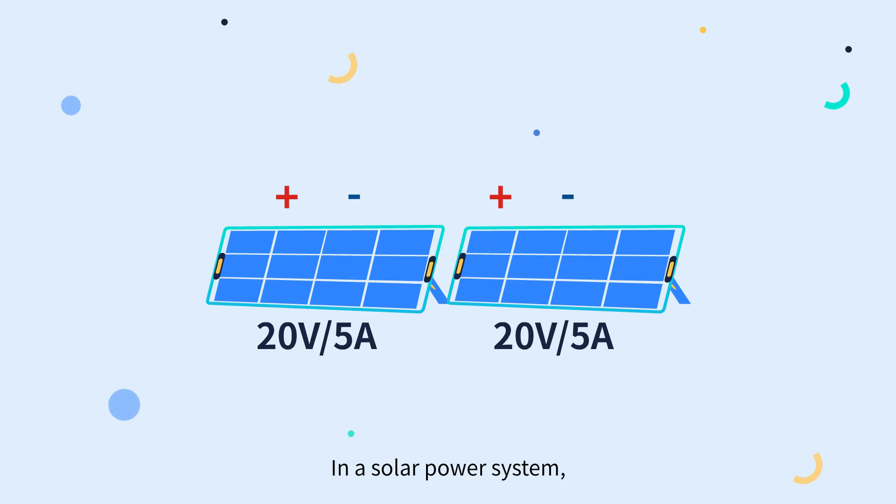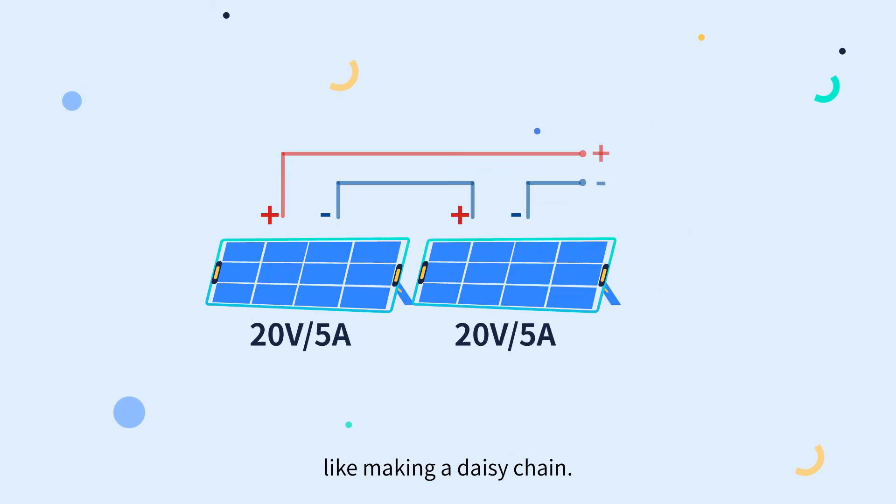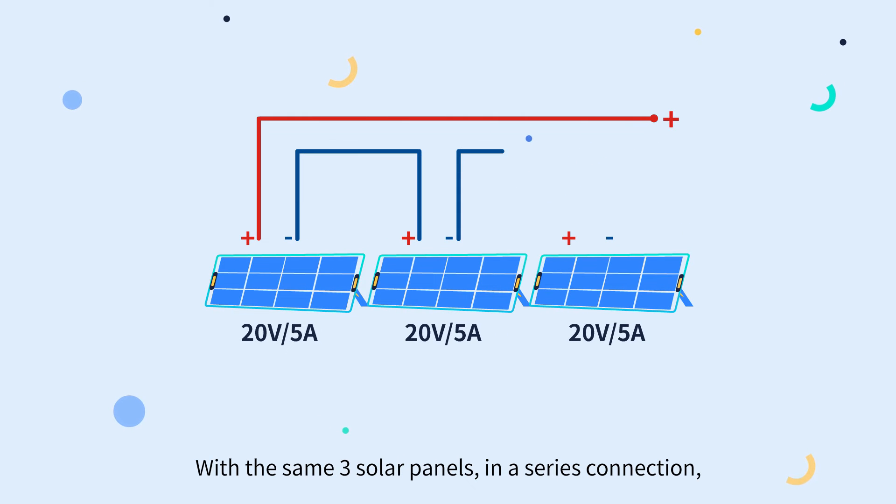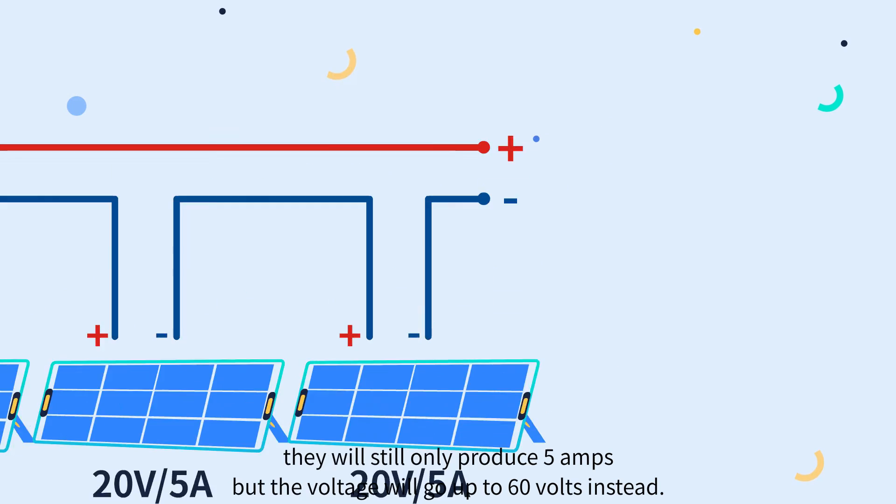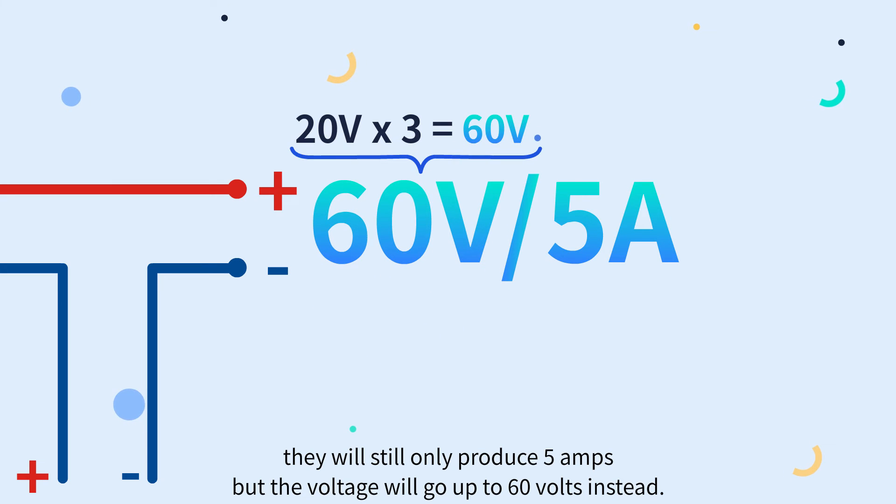In a solar power system, series connection means connecting the positive of one to the negative of the one next to it, like making a daisy chain. With the same three solar panels in a series connection, they will still only produce 5 amps, but the voltage will go up to 60 volts instead.